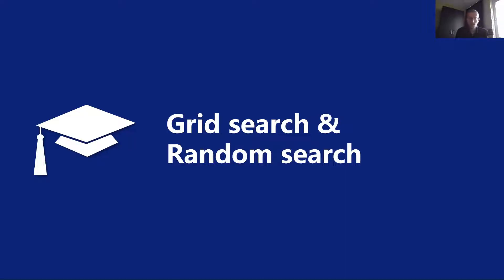Hi everyone. In this video we're going to take a look at two methods to do hyperparameter optimization, although they can also be used for algorithm selection. Recall that in hyperparameter optimization what we want to do is find hyperparameters that maximize the performance of the machine learning model. In this video we're going to look at grid search and random search to do this.